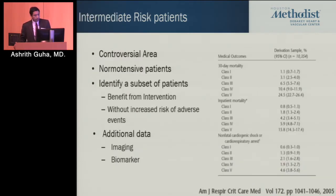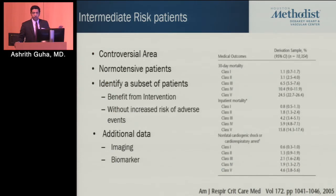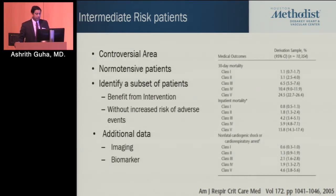Moving to the intermediate-risk patients — to recap, high-risk patients are those who have had hypotension. For low-risk patients, we have a reasonably well-functioning score to identify who can be treated at home. But the real gray area is intermediate-risk patients — those belonging to PESI class 2 through 4, where risk of mortality is between 3 and 10%, but they are not hypotensive.